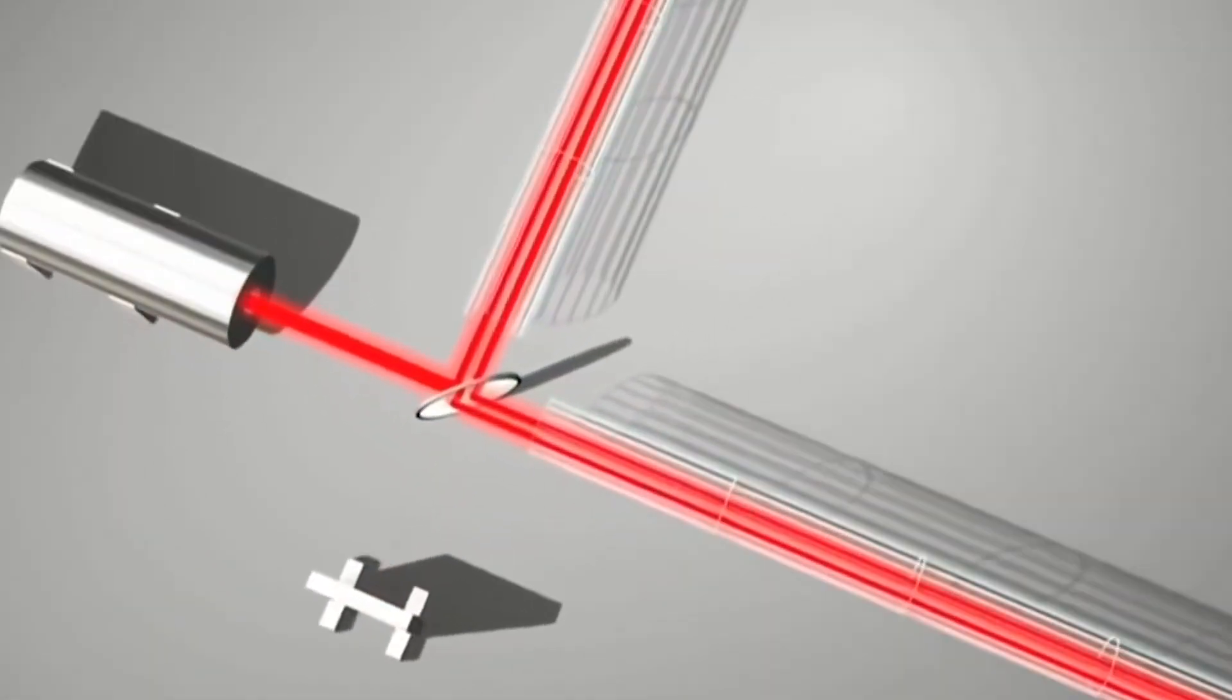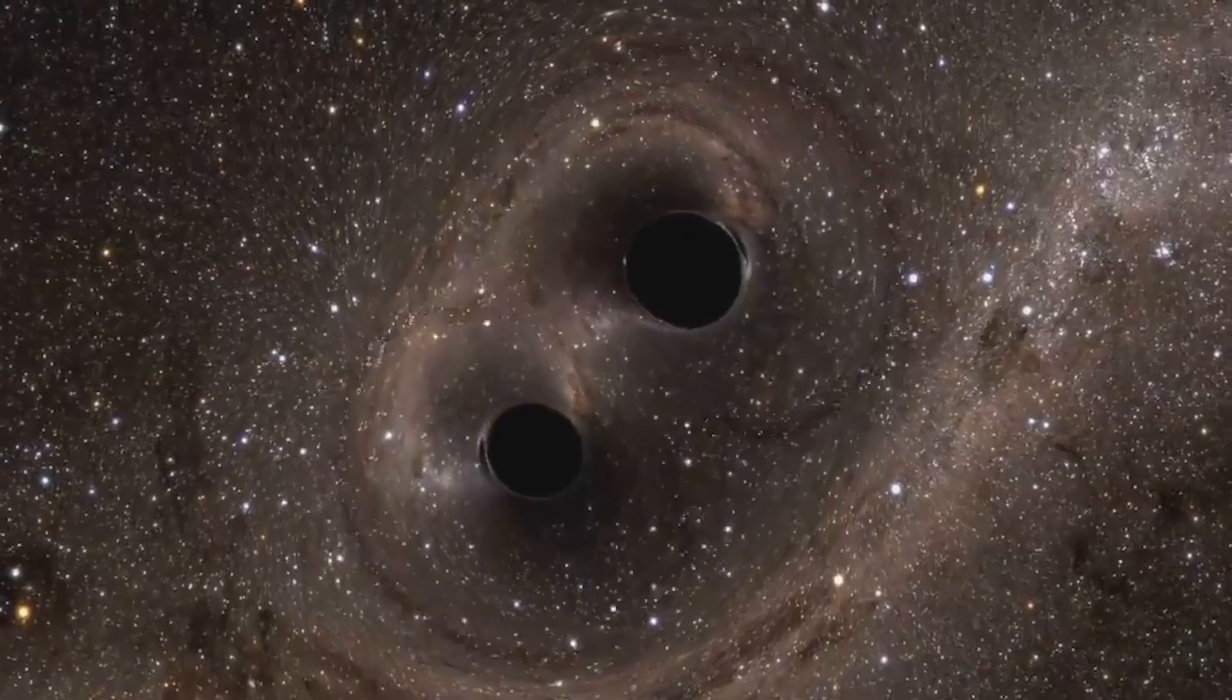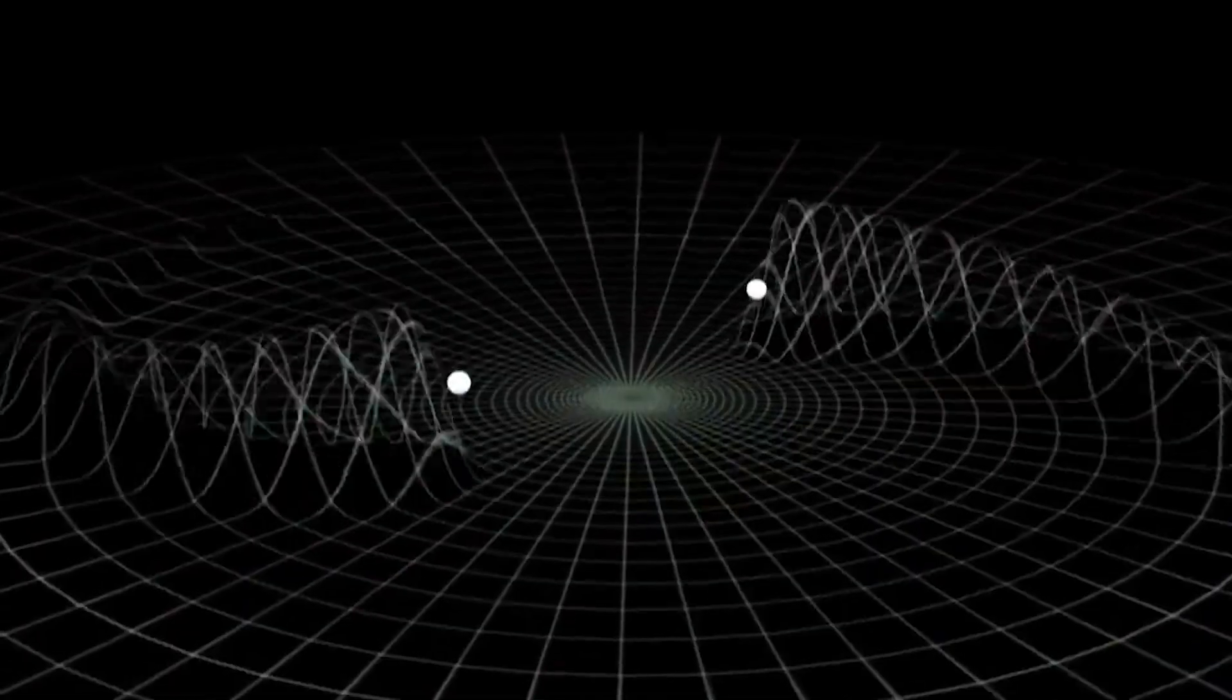These were predicted by Einstein over 100 years ago and first directly detected by the LIGO experiment in 2015. So far we've heard neutron stars and black holes violently colliding in far-off galaxies.